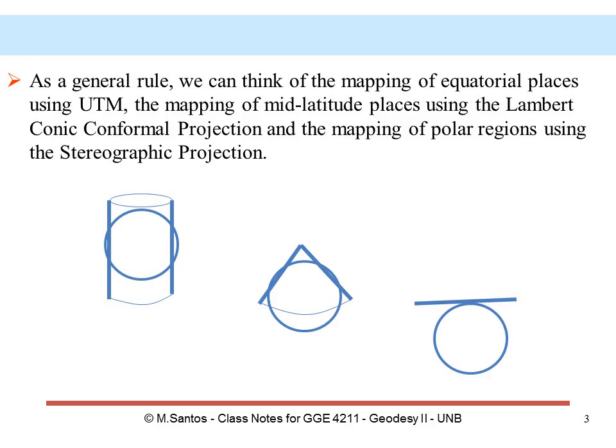As a general rule, we can think of the mapping of equatorial places using UTM, mid-latitude places being mapped using the Lambert conformal conic projection, and polar regions being mapped using the stereographic projection. We discussed the use of the stereographic projection for mapping of a particular region, which is New Brunswick and PEI, using the stereographic double projection.